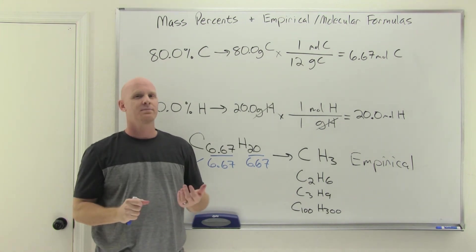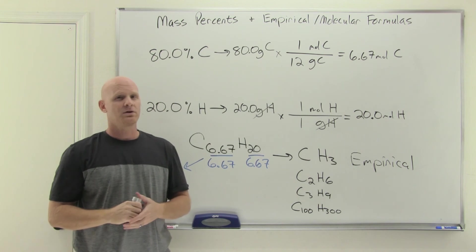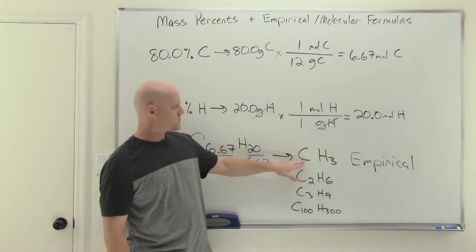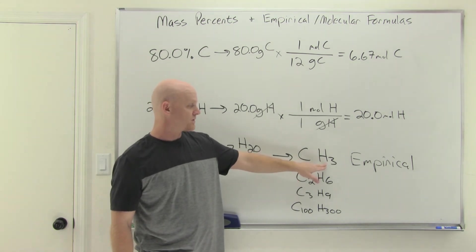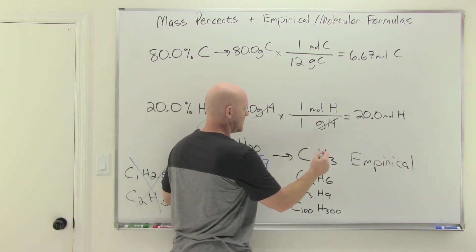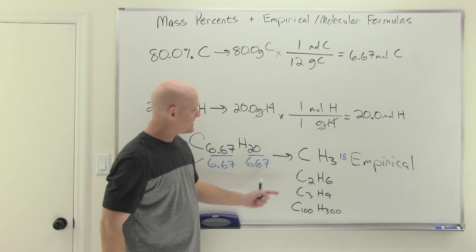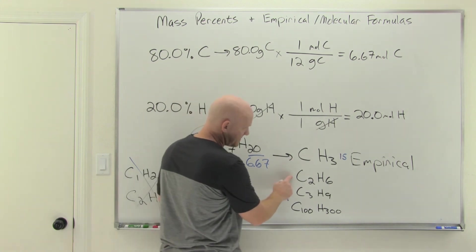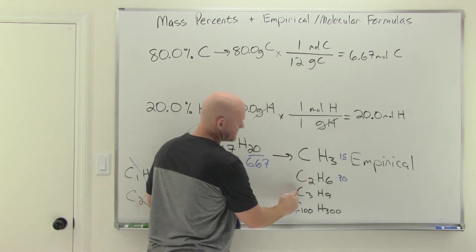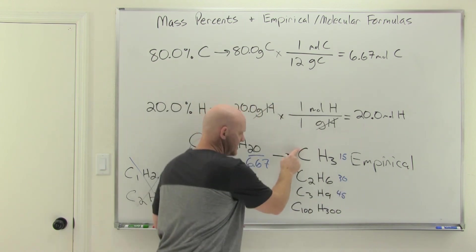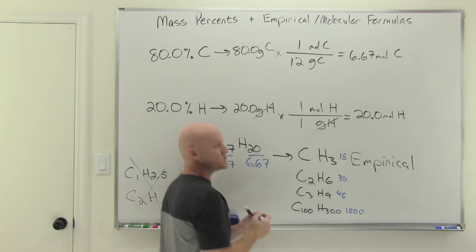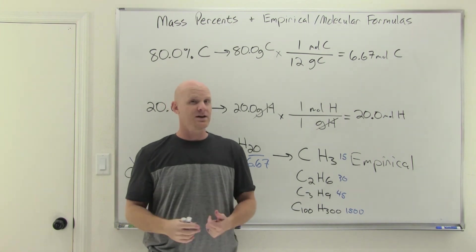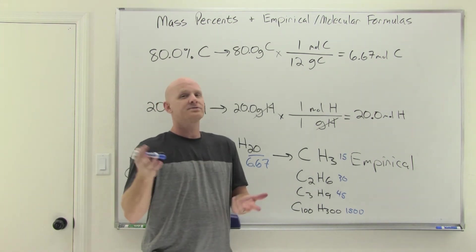We figure out the right one by being supplied with a molar mass. If you know the molecular weight or molar mass, then you can figure it out. One thing you should realize is that CH3, carbon weighs 12, hydrogen weighs one each for a total of 3. 12 plus 3 is 15. This is going to have a weight of 15. And since all of these are multiples of that formula, their corresponding weights would all be multiples of 15. Double the formula, doubles the weight. Triple the formula, triples the weight. Hundred times the formula, a hundred times the weight. I know whatever this compound is, its molar mass or molecular weight is going to have to be a multiple of 15. Once I supply it with you, you just figure out what multiple of 15 is it.